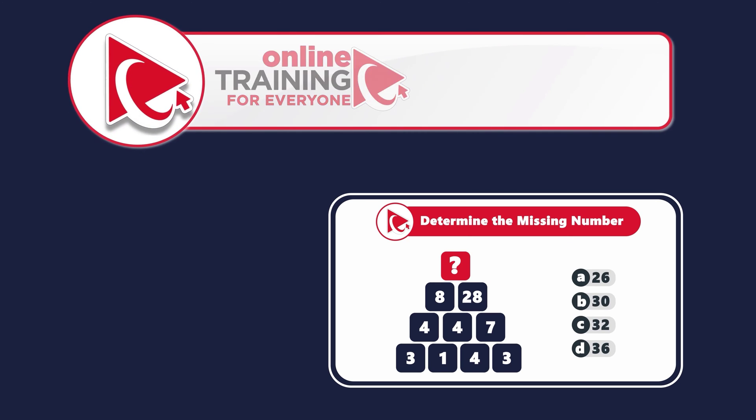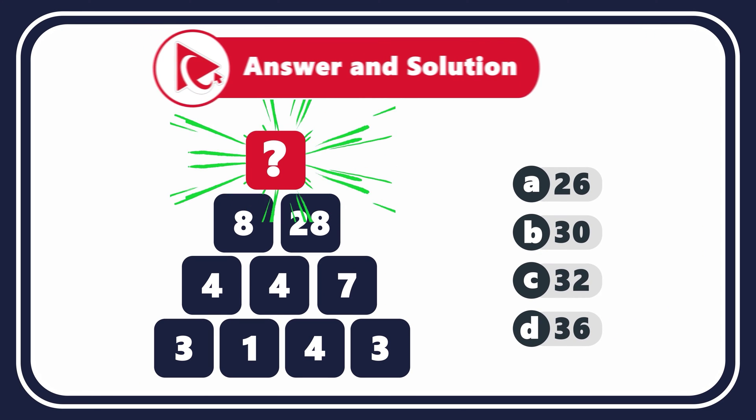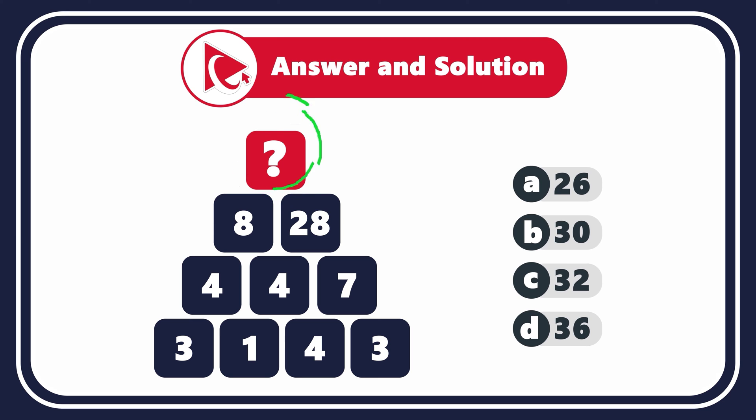Prepare to tackle this intriguing assessment test question, designed not just to test your mental math abilities, but also to foster your analytical skills, which you can use in day-to-day life. You need to determine the missing number, which is located on the top of the pyramid. The other numbers in the pyramid are 8 and 28 in the second row, 4, 4, and 7 in the third row, and 3, 1, 4, and 3 in the fourth row.